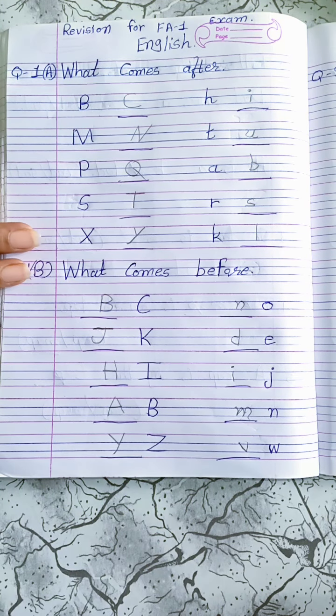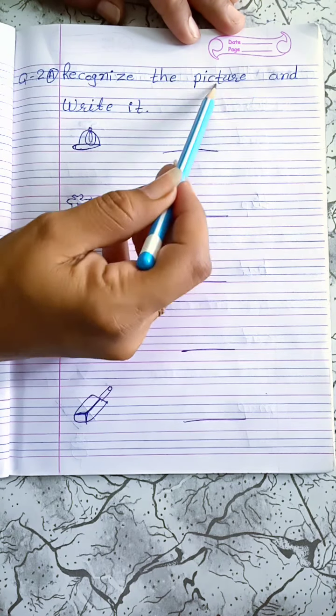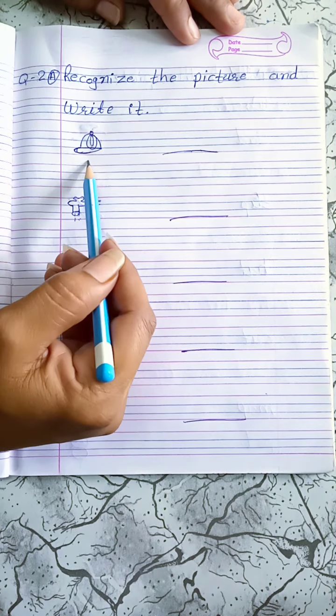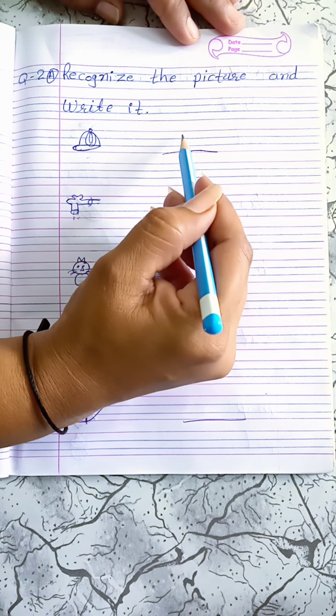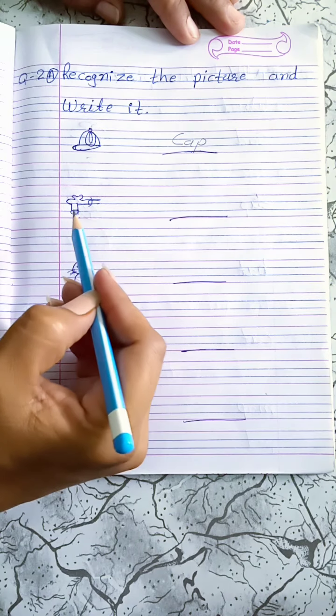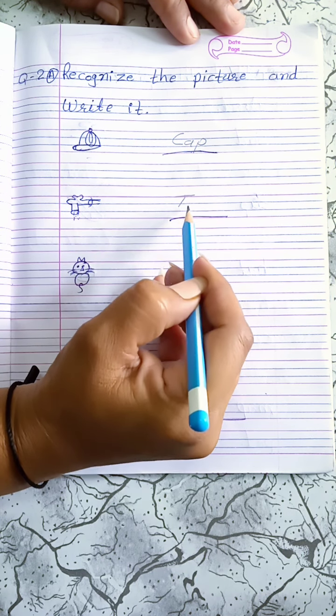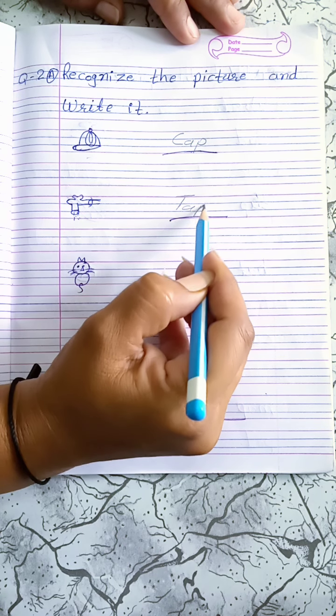Now, take next page. Question 2A: Recognize the picture and write it. First is cap. Write the spelling of cap: C-A-P, cap. Second, tap: T-A-P, tap.